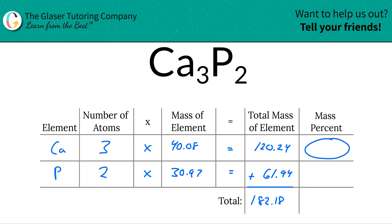So now to find the mass percent of calcium or the percent composition of calcium, just simply take the total mass of that calcium, not its molar mass or its molecular mass, the total mass. 120.24, and then divide it now by the total mass of the entire compound. Hence why that's what we had to calculate first. So 182.18.